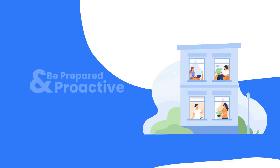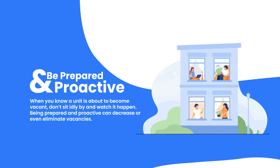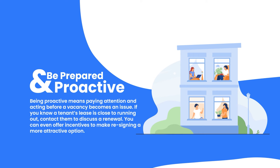Our next suggestion is to be prepared and proactive. When you know a unit is about to become vacant, don't sit idly by and watch it happen. Being prepared and proactive can decrease or even eliminate vacancies. Mostly it just means paying attention and acting before a vacancy becomes an issue. If you know a tenant's lease is close to running out, contact them to discuss a renewal — you can even offer incentives to make resigning a more attractive option. If a tenant informs you that they will be moving out at the end of their lease, list the property as soon as you find out.